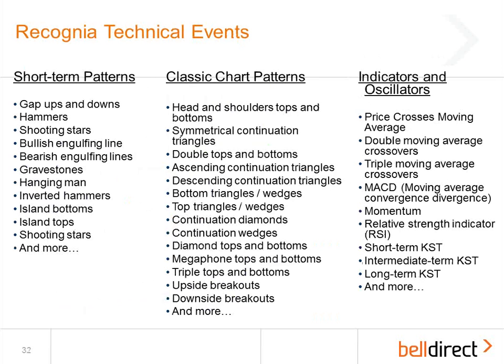So we've talked about a number of different kinds of classic chart patterns, had a quick walkthrough of indicators and oscillators, and talked about just two different kinds of short-term patterns. The great thing is you don't have to spend time studying books and understanding all the ins and outs of these different technical events, because this is what Recognia can do automatically for you. All the different events I've shown — Recognia will find them automatically. And it doesn't just find those events on one or two stocks. We scan the entire Australian market every night and will find any of these events that have occurred against any stock in the marketplace. We do the heavy lifting so you don't have to.